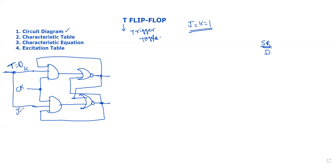If we have a value, we change the output. If we change the same state, we check the characteristic table. This is the circuit diagram using the latch — we check the JK. Next is the characteristic table.